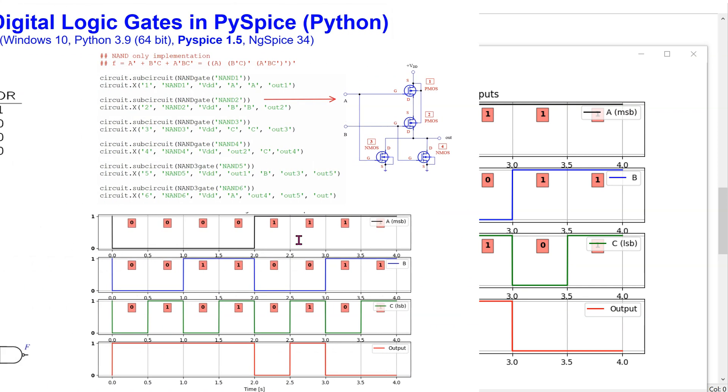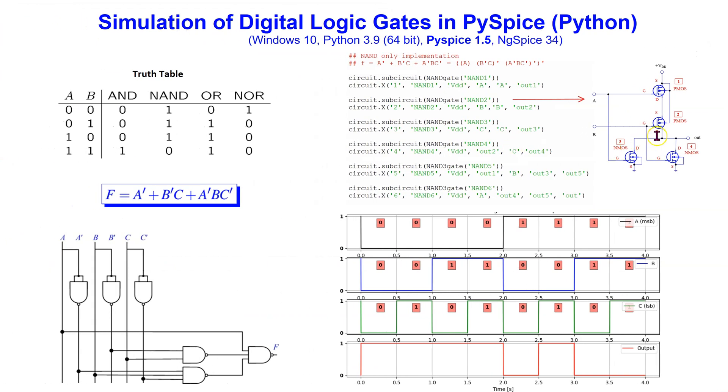In summary, in this video, we have seen how to use MOSFETs to simulate combinational logic circuits in PySpice. The use of the sub-circuit approach allows efficient implementation. Using this technique and basic building blocks, we can also simulate sequential logic circuits such as flip-flops in PySpice.